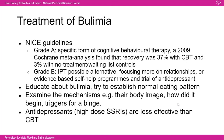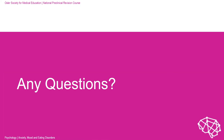Treatment of bulimia follows NICE guidelines split into grade A and grade B. Grade A involves specific CBT forms — a meta-analysis found a 37% recovery chance with CBT versus 3% on a waiting list control. Grade B uses interpersonal therapy focusing on relationships, evidence-based self-help programmes, and trials of antidepressants. The approach aims to educate about bulimia, establish normal eating patterns, examine mechanisms of the eating disorder including body image and binging triggers, and use antidepressants — which are less effective than CBT. That concludes the session.